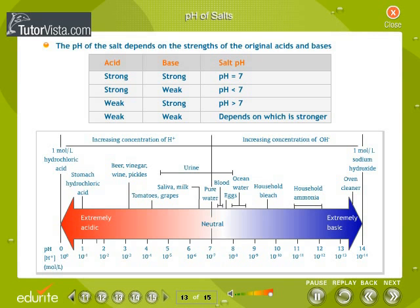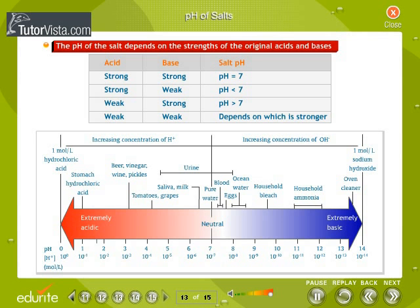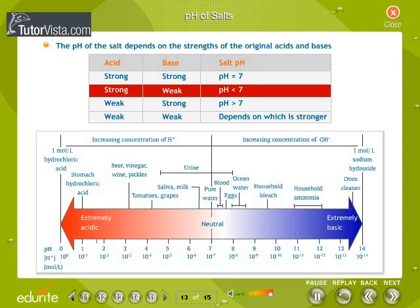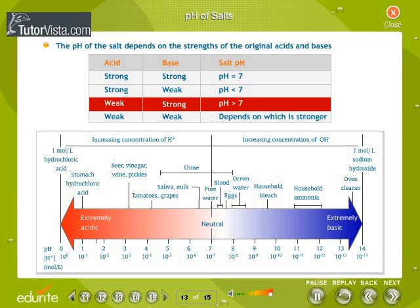pH of salts: A salt is formed when an acid and a base are mixed, and the acid releases H⁺ ions while the base releases OH⁻ ions. This process is called hydrolysis. The pH of the salt depends on the strengths of the original acids and bases. Salts of a strong acid and a strong base are neutral with a pH value of 7. Salts of a strong acid and weak base are acidic with pH less than 7, and those of a strong base and weak acid are basic, with pH more than 7.